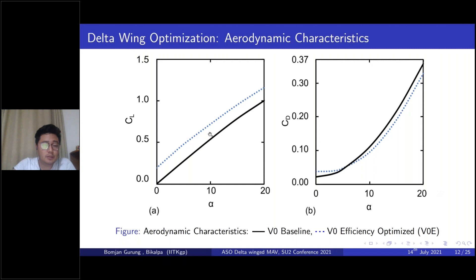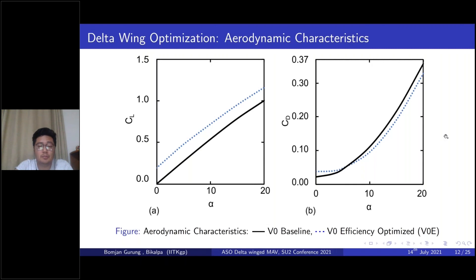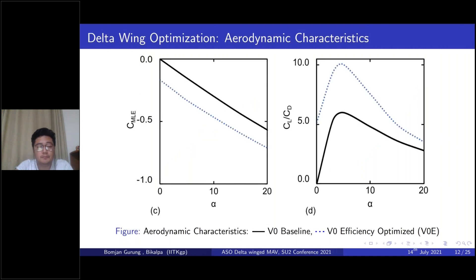These are the aerodynamic characteristics of the optimized wing tested at a range of 0 to 20 degrees. Throughout the range, we see a constant increase in the coefficient of lift. In terms of drag, there is a higher minimum drag for the optimized wing, whereas as the angle of attack increases, total drag decreases compared to the baseline wing. The pitching moment coefficient shows a higher nose-down moment at all angles of attack while the moment slope remains the same. Aerodynamic efficiency is higher throughout the range, reaching maximum at 5 degrees, which is expected since the design optimization was conducted at 5 degrees.